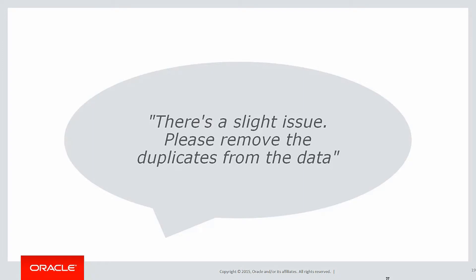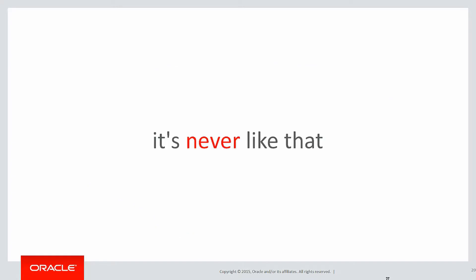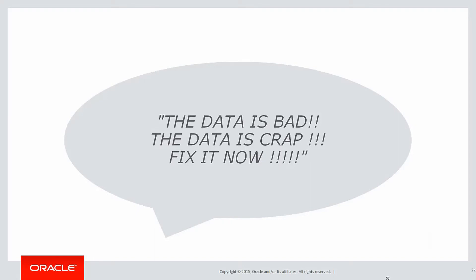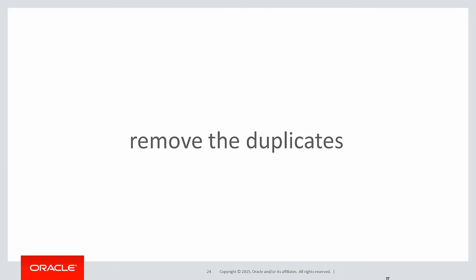All of a sudden your phone rings. How many managers will say this to you: 'There seems to be a slight issue — please remove the duplicates from the data.' Of course they don't say this. What happens is they say 'Here was my output, it's wrong, you made me look like a fool.' The data is bad, fix it now — your career is on the line. In this case unfortunately the manager was correct: when we look at the data, somehow when we loaded it up, July had duplicates loaded.